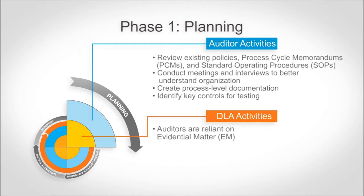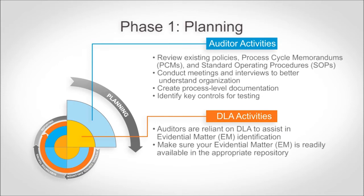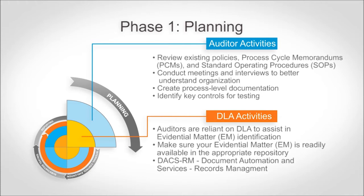Auditors will be heavily reliant on DLA to assist in the evidential matter (EM) identification process. Evidential matter is the proof that supports DLA's purchases, sales, inventory balances, and so on — both paper and electronic. Each organization should ensure that their evidential matter is stored in the appropriate repository, such as time and attendance in EGLE, travel documents in DTS, or in another system such as DAX-RM — Document Automation and Content Services Records Management — an enterprise-wide information and records management program for storing DLA's documents and data not already electronically stored elsewhere.